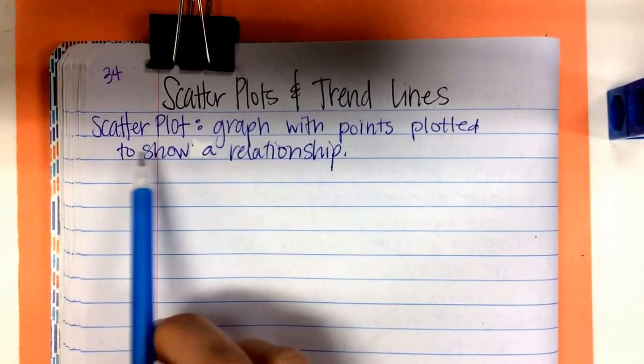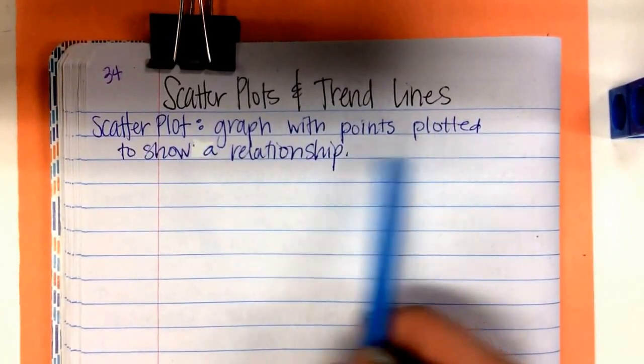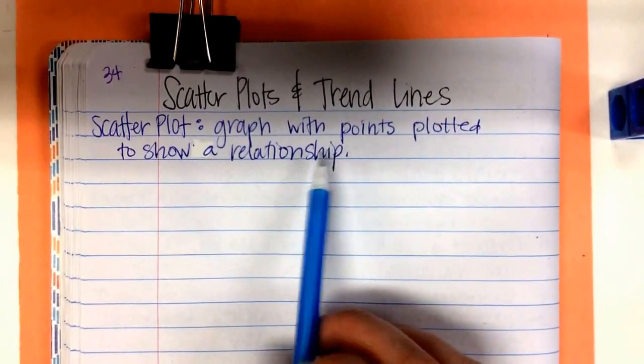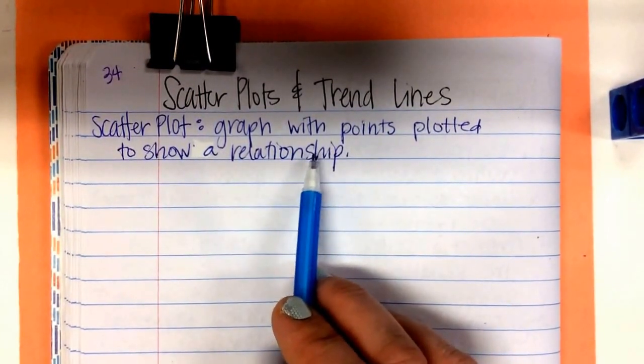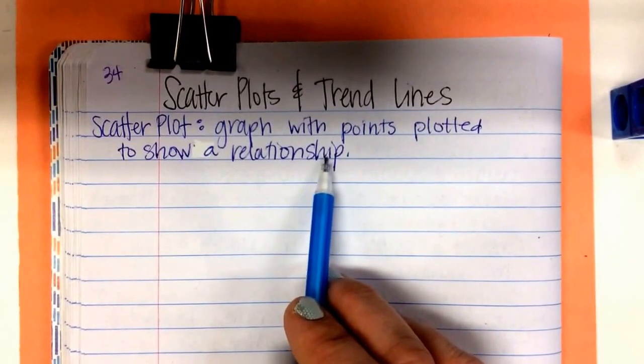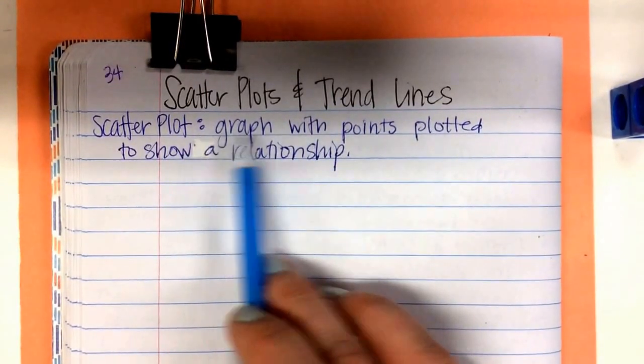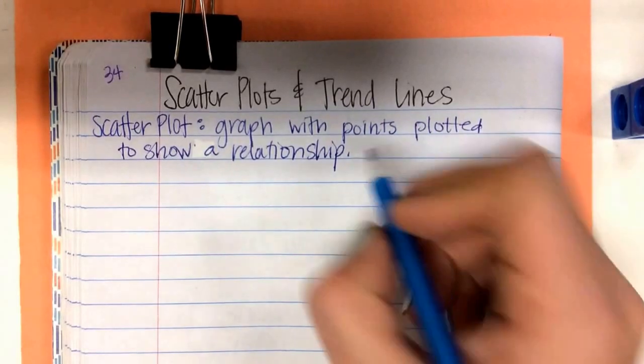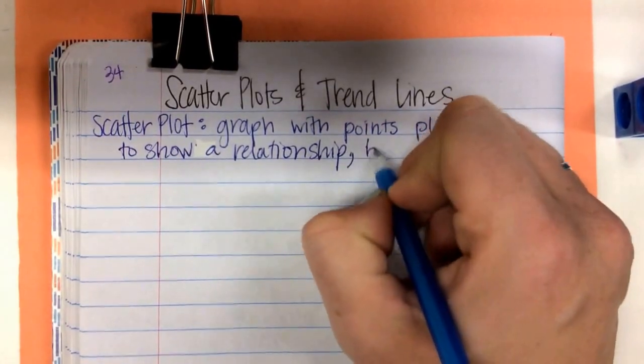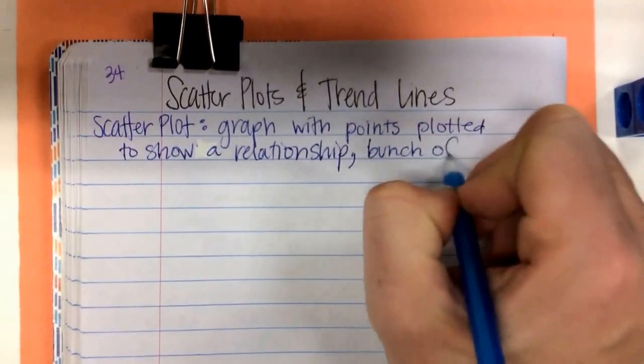The scatter plots and trend lines. So a scatter plot is a graph with points plotted to show a relationship. We've actually done scatter plots before. It's a point made up with, or a graph made up with points. Right? It's a bunch of dots.